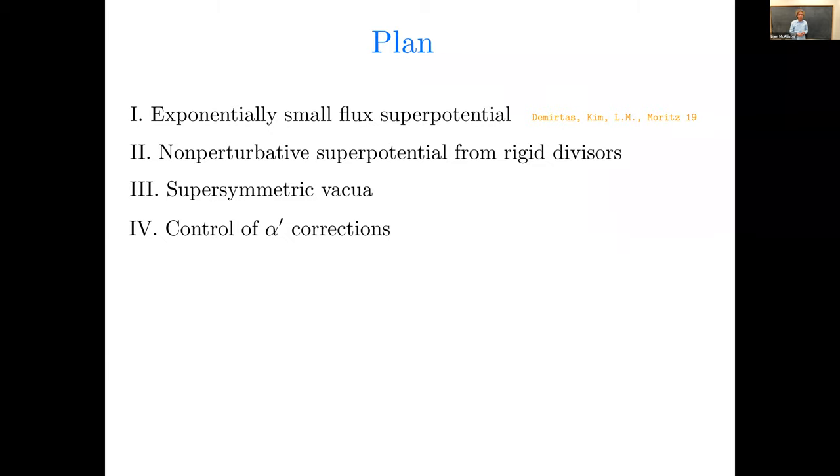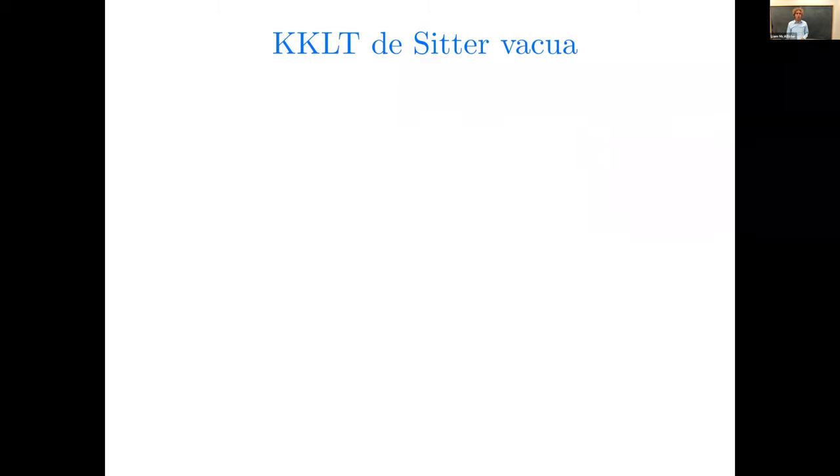Okay, so the plan of the talk. First I'll explain how we get an exponentially small flux superpotential by method that we laid out in 2019. I'll then explain how we obtain the non-perturbative superpotential from rigid divisors. We'll put those together to get supersymmetric vacua, and then I'll explain why this is a controlled construction.